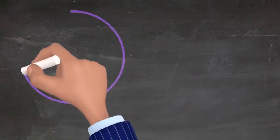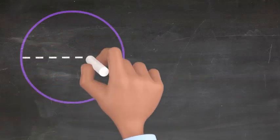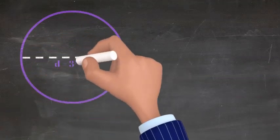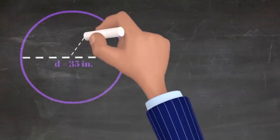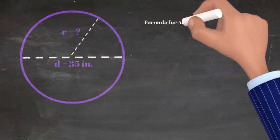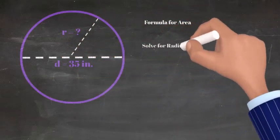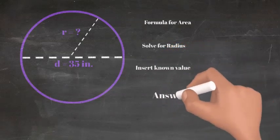Now let's try another problem. With this circle, the diameter is 35 inches and we do not know the radius. When this is the case, we need to start with finding the radius, which adds an extra step of dividing the diameter by 2. When we divide 35 by 2, we get 17.5 for our radius value.